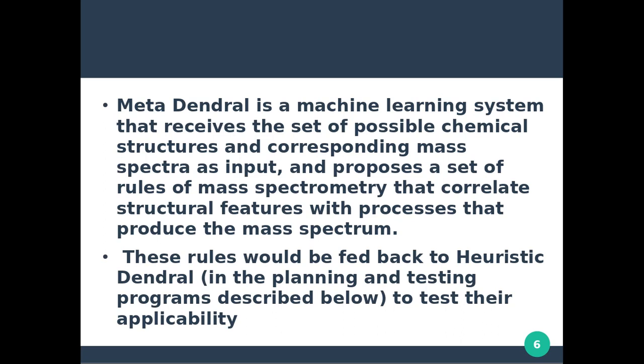So in summary: Heuristic Dendral produces chemical structures; Meta-Dendral receives those structures and the corresponding mass spectra as input, processes them, and proposes a set of rules of mass spectrometry that correlate structural features with processes that produce the mass spectrum. These rules are then fed back to Heuristic Dendral to test their applicability.